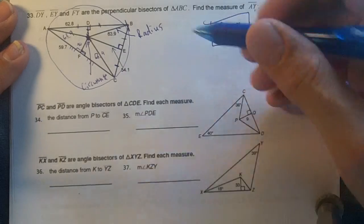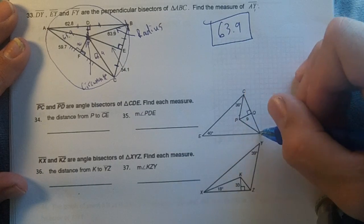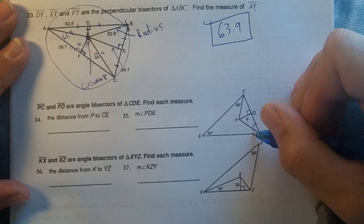PC and PD are angle bisectors. PC and PD are angle bisectors, so that means they split these angles in two.